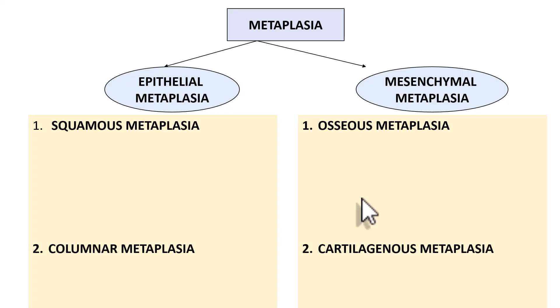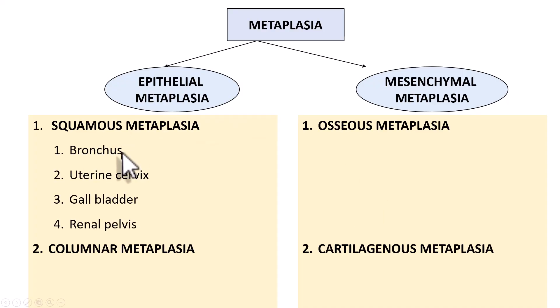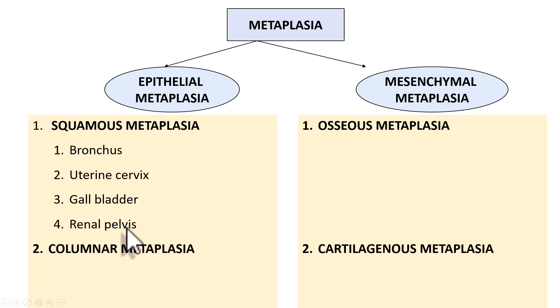Squamous metaplasia commonly involves the bronchus, uterine cervix, gallbladder, and renal pelvis. The bronchus is lined by pseudostratified ciliated columnar epithelium, the endocervix by columnar epithelium, the gallbladder by simple columnar epithelium, and the renal pelvis by transitional epithelium. Because of irritation, these lining epithelia are replaced by squamous epithelium — hence the terms squamous metaplasia of bronchus, cervical squamous metaplasia, squamous metaplasia of gallbladder, and so on.